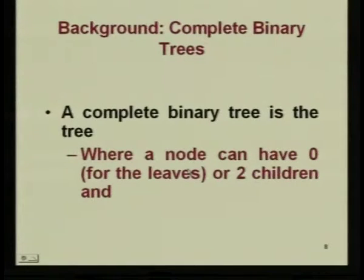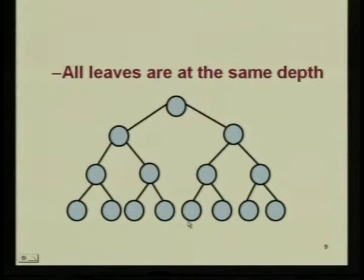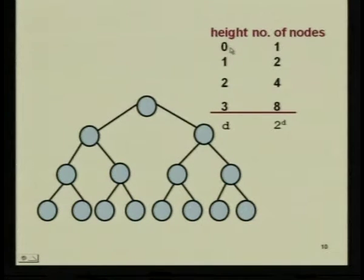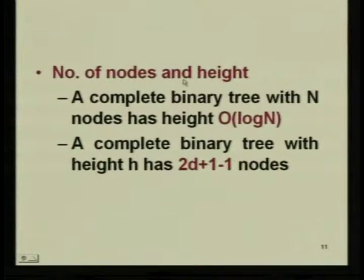We are going to look at one of the sorts — the heap sort. First, as I already told you, in this lecture we are going to look at only what the heap is. So, what is a heap? Before we go to what is a heap, we have to define what is a complete binary tree. A complete binary tree is a tree where a node can have only 0 or 2 children, and all the leaves as far as possible are on the same depth. At height 0 there is 1 node, at height 1 there are 2 nodes, at height 2 there are 4 nodes, at height 3 there are 8 nodes. So, at height d there will be 2 to the power of d nodes. This is a property of a complete binary tree.